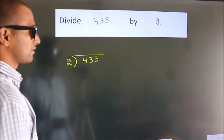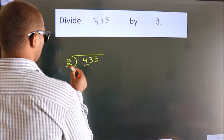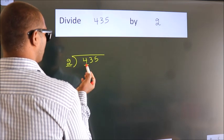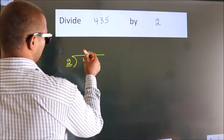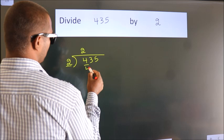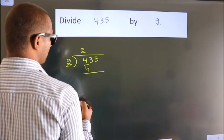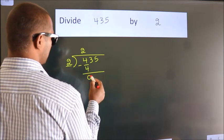Next, here we have 4, here 2. When do we get 4? In 2 table, 2 2s, 4. Now we should subtract. We get 0.